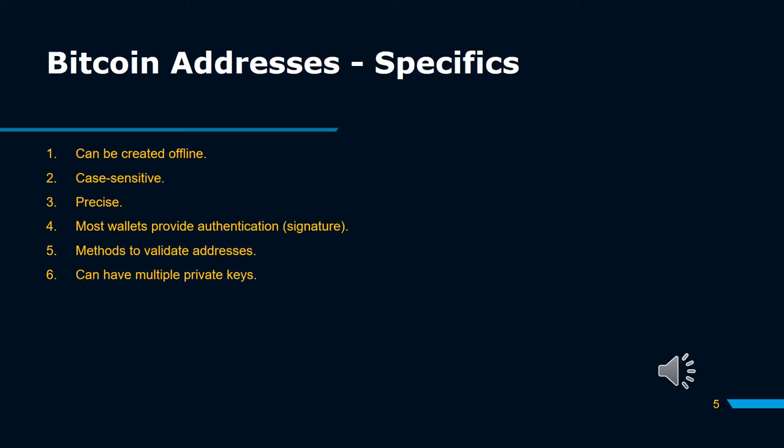Bitcoin Address Specifics: 1. Can be created offline. 2. Case sensitive. 3. Precise. 4. Most wallets provide authentication and signature. 5. Methods to validate addresses. 6. Can have multiple private keys.